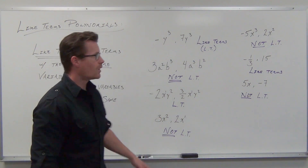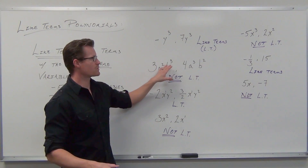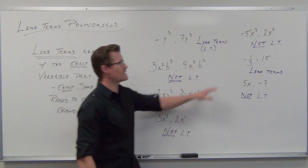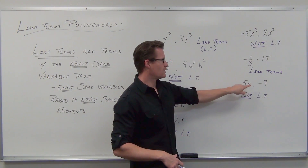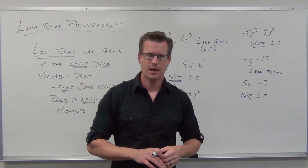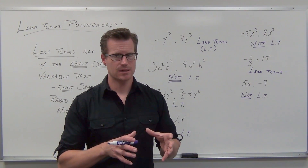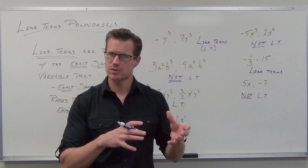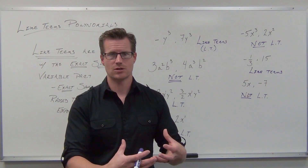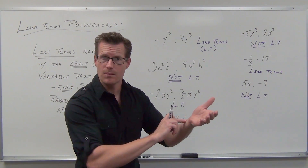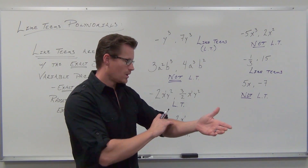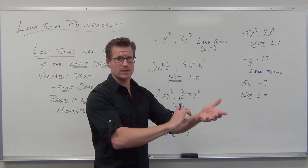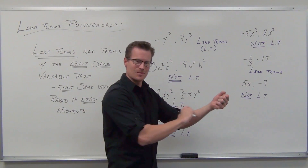Here's why this is so important to understand. Same variable, same power — like terms. Same variables, but not the same power — not like terms. Different variables — not like terms. No variables — constants are automatically like terms. A variable term paired with a constant — not like terms. Here's the key: you can only add or subtract like terms. When you combine terms by adding or subtracting polynomials, that is the process of combining like terms, and only like terms can be combined. Tattoo that on your forearm — well, don't actually. But remember: I can only combine like terms. Like Harry Potter's 'I must not tell lies' — I can only combine like terms.